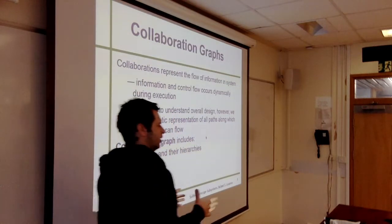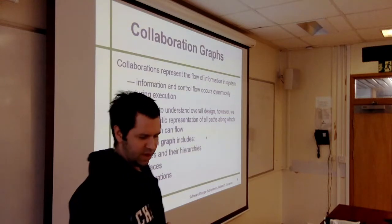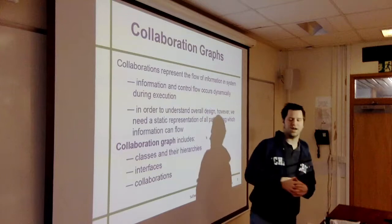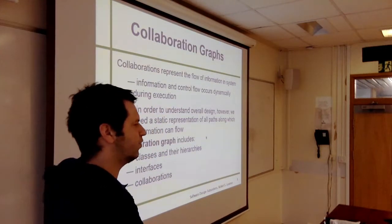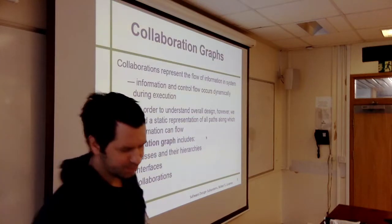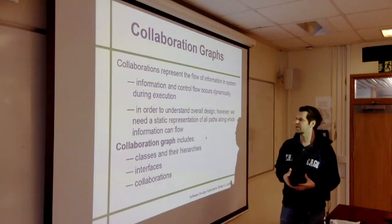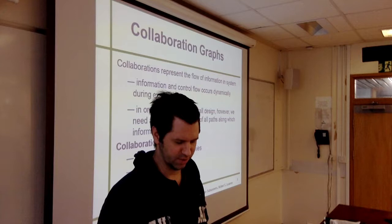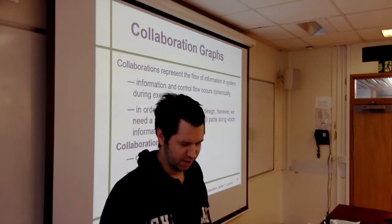Java has an interface keyword and an interface class that you can use. Collaborations represent the flow of information in your software — this is the big challenge with object-oriented design. It's trying to understand the flow of information, the flow of control, the order in which events happen and the way information flows during execution. In order to do that, we try to come up with ways to depict that communication statically in a diagram, without any time-dependent necessities. A static representation of all the paths.